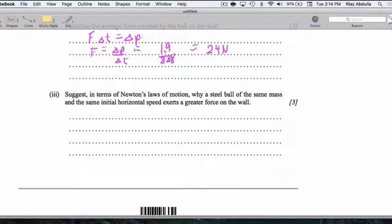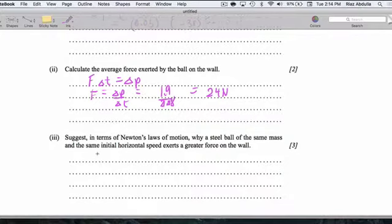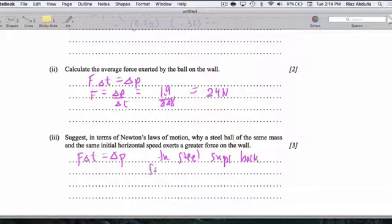So why would a steel ball of the same mass and the same initial horizontal speed exert a greater force on the wall? Here's what I'll say. F delta T equals delta P. So the idea with a steel ball hitting and bouncing back works like this. The steel snaps back faster.